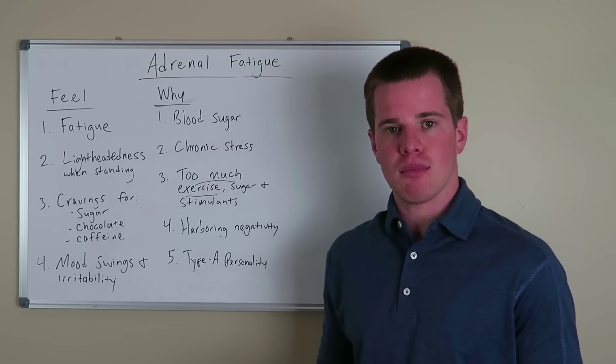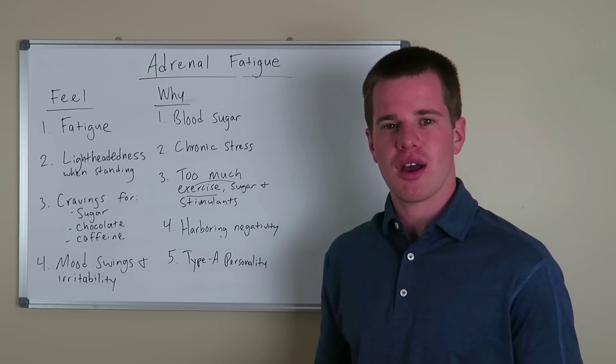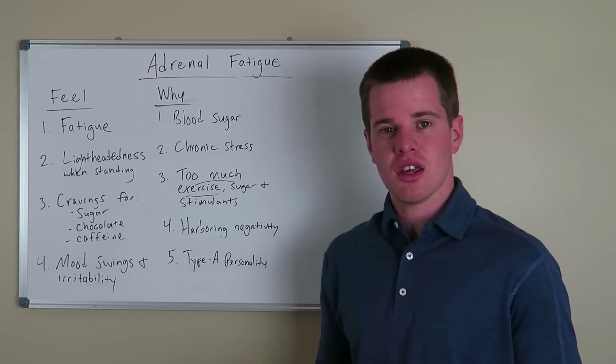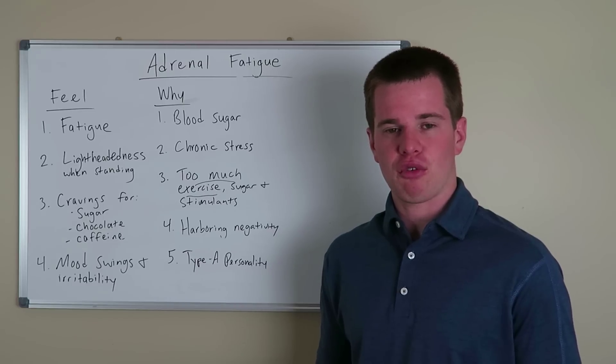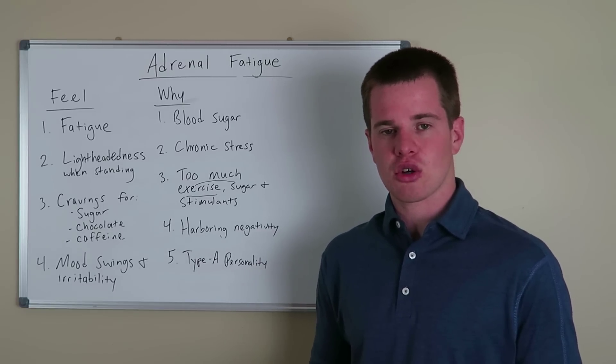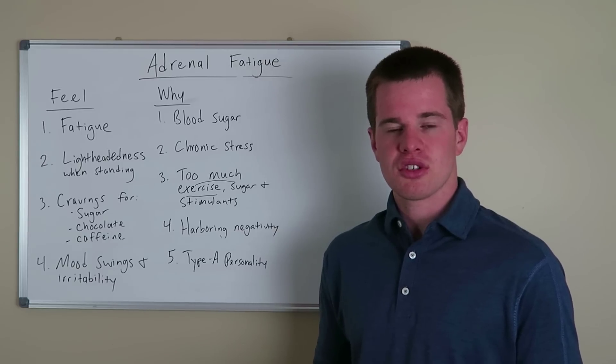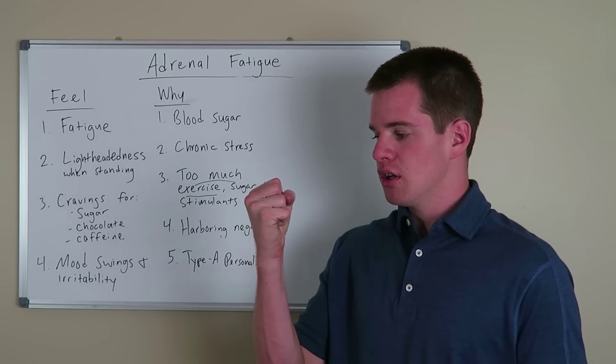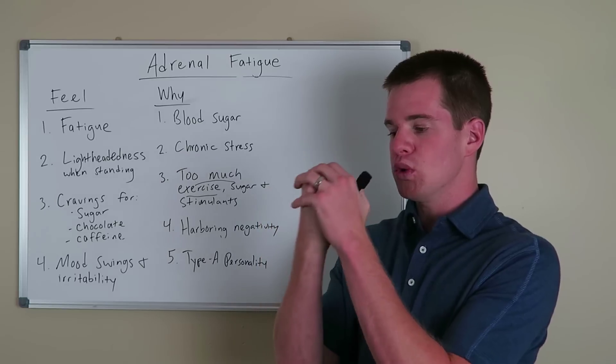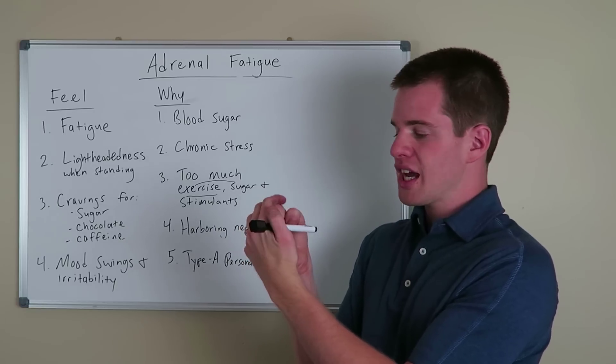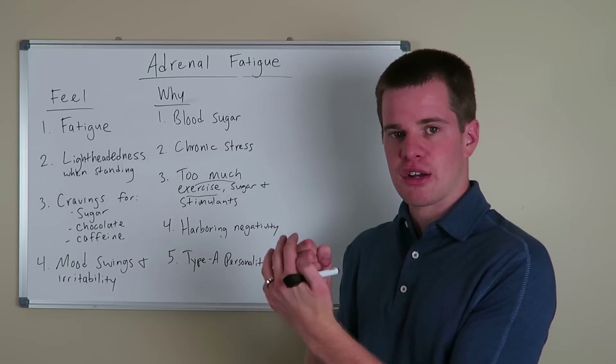So that fight or flight mode, when someone cuts you off on the highway and you feel angry or you feel your heart racing, that is a sympathetic fight or flight response that is initiated by the adrenal glands that secrete various hormones. So you have the adrenal cortex, which is the center, and then you have the adrenal medulla that sits on the outside. Now, each different section of the adrenal gland secretes different hormones.